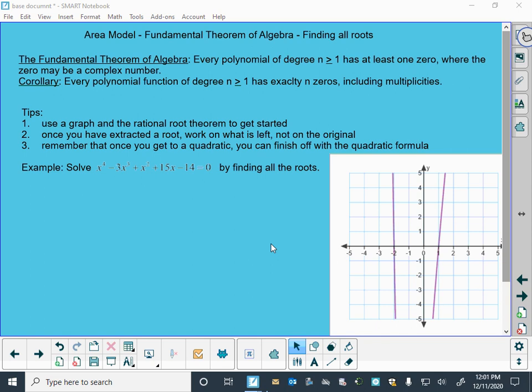So if we have a degree 5, there should be five zeros. Those zeros may be nice whole numbers. They could be integers, they could be rational numbers. If one of them is an irrational number, then we know that there's at least two that are irrational numbers and they're closely related.